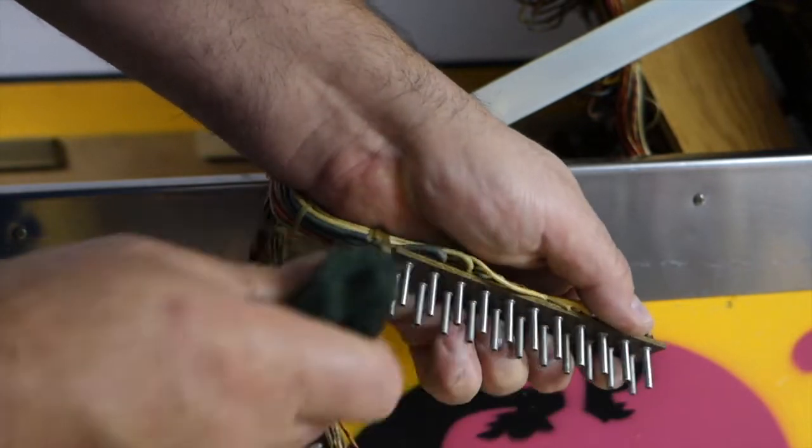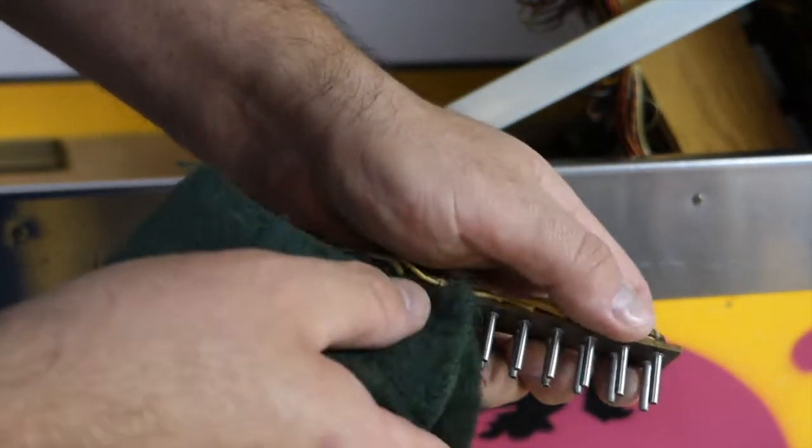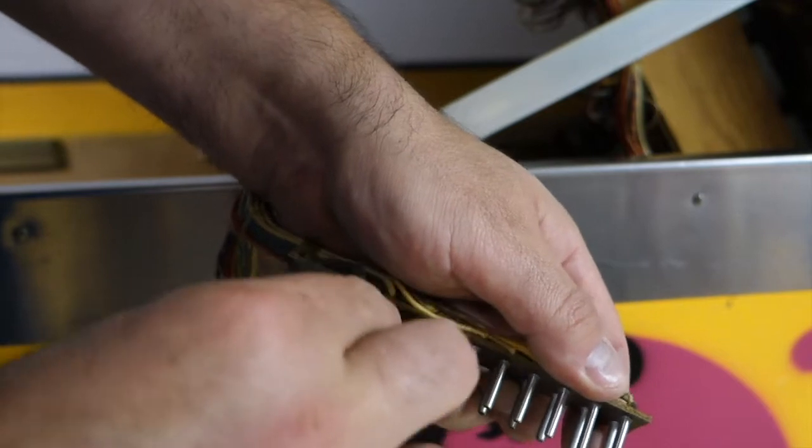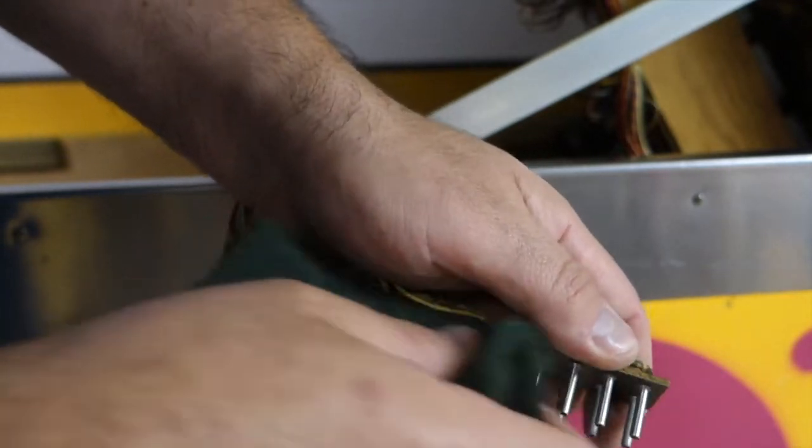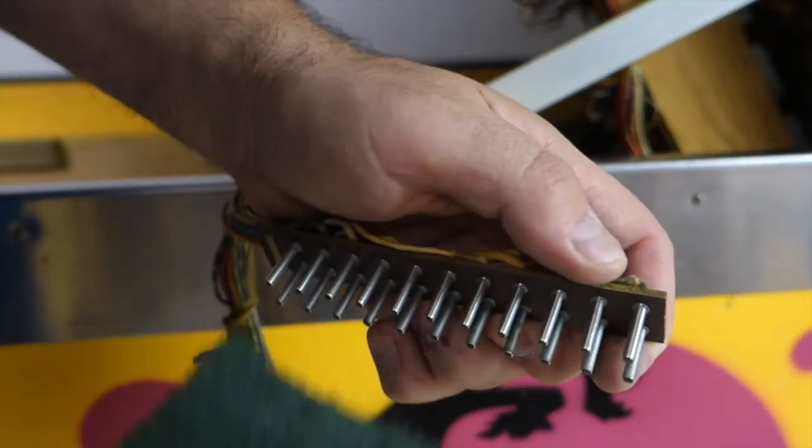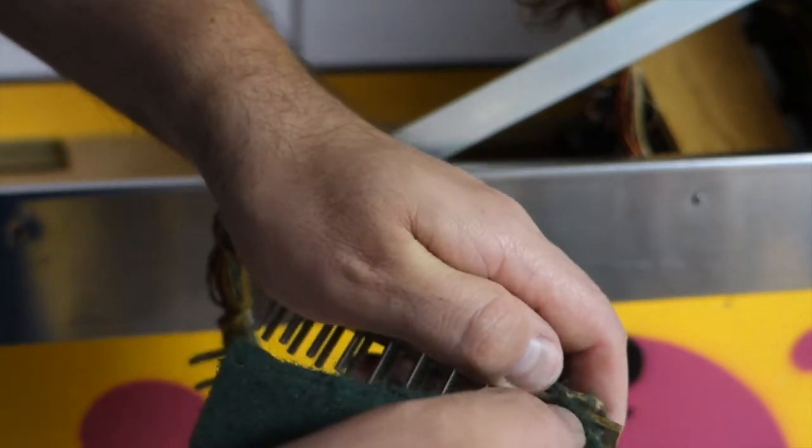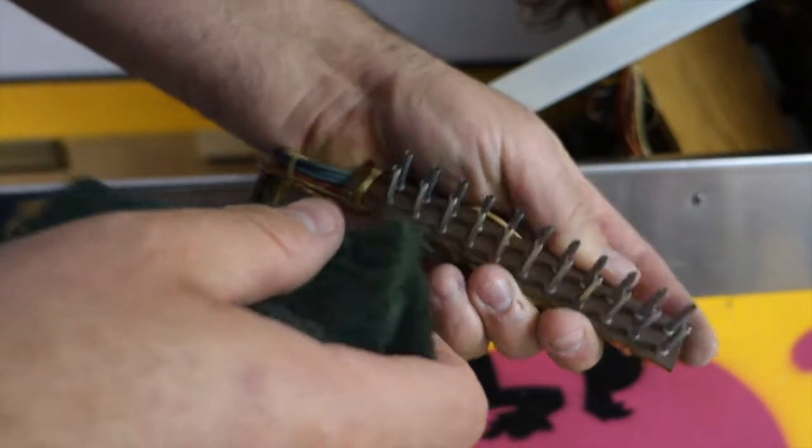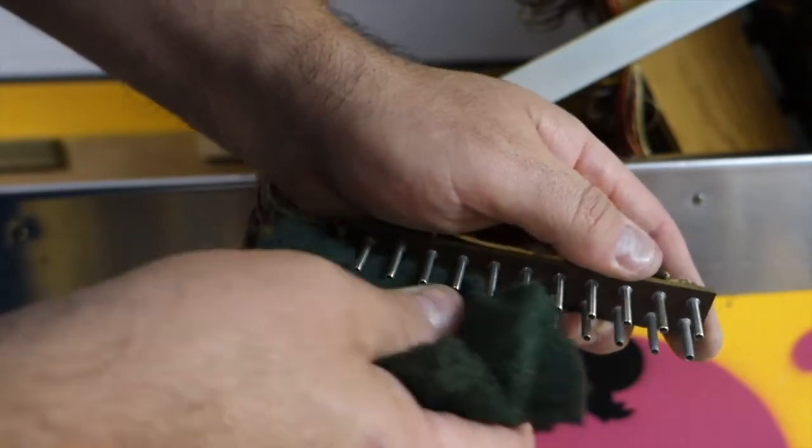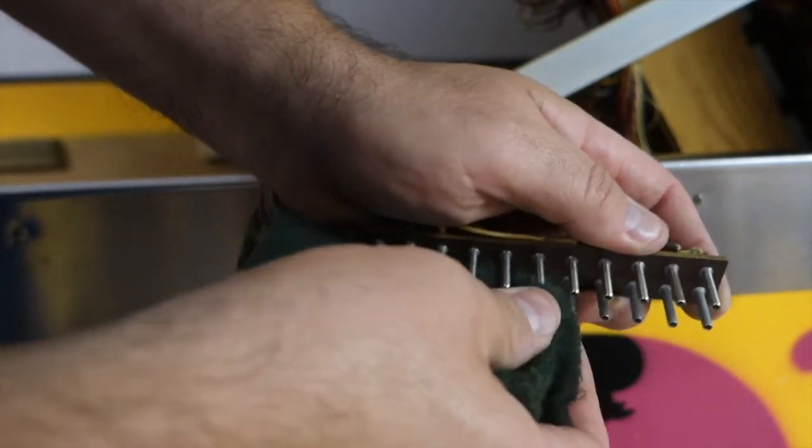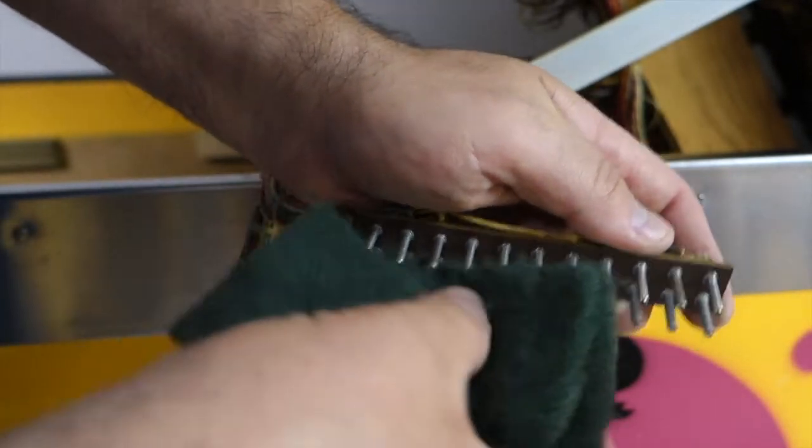You can go over it real close again to see if you can see any other more tarnished areas that you need to work over a little bit. But yeah, that's about it. You can clean the middle here if you really want to. I'll do that.